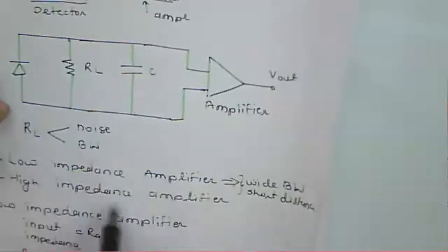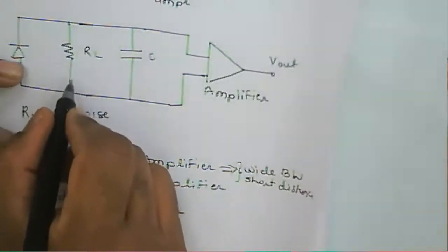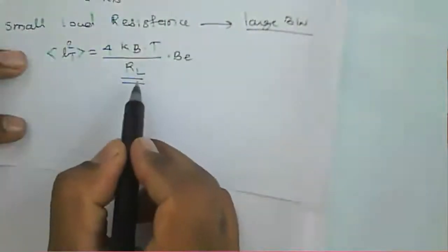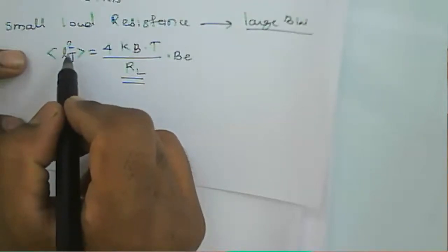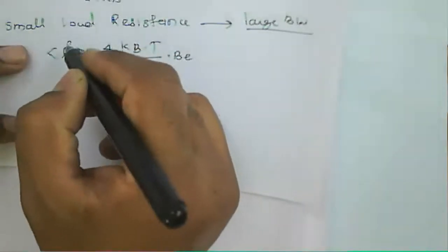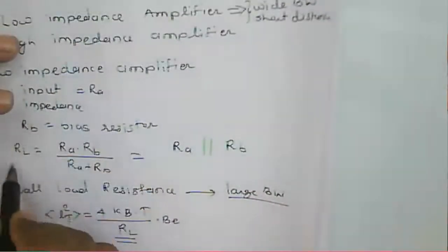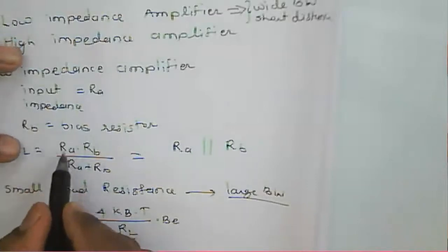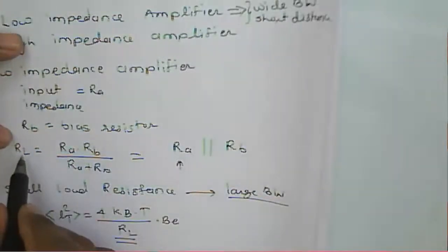In the case of a high impedance amplifier, if the load resistance is larger, thermal noise will be reduced. For a given large value of load resistance, we get low thermal noise. The input impedance depends on load resistance, which is the parallel combination of R_A and R_B. Increasing R_A gives a higher R_L.